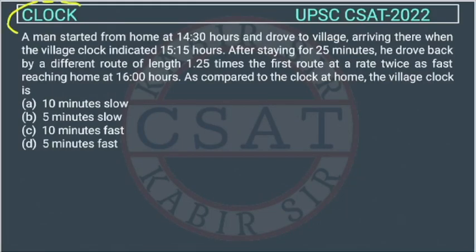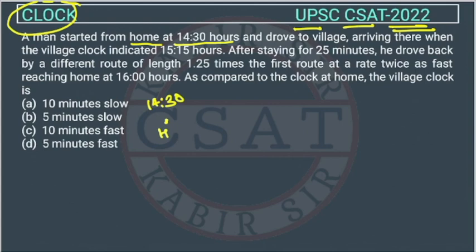This is a question from the clock chapter asked by UPSC in the CSET paper of 2022. A man started from home at 14:30 hours — that means 2:30 — and drove to a village, arriving there when the village clock indicated 15:15.